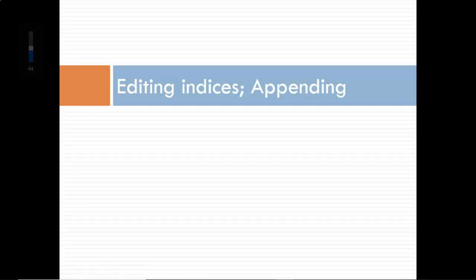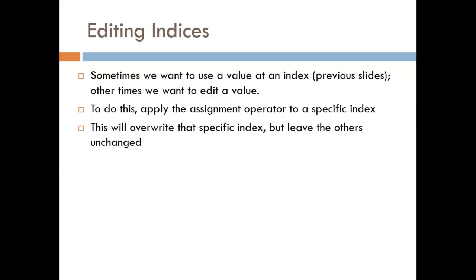Hello. We have seen already how to identify a specific index within an array and extract its value. That is a very useful skill, but sometimes we want to edit individual or multiple values within an array. That is what this video is all about. To do this, we will take advantage of the assignment operator and apply it to a specific index within an array. When doing so, it will overwrite the value held in that index, but leave the rest of the array unchanged.